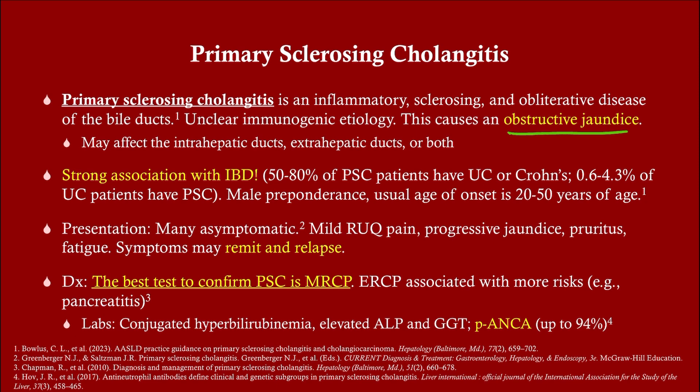With PSC, there's a big association with IBD, particularly with ulcerative colitis — 50 to 80 percent of PSC patients also have inflammatory bowel disease. However, just because somebody has IBD does not necessarily mean they're going to develop PSC; only about half to four percent of people with ulcerative colitis will develop PSC. There is a male preponderance, which is unusual for autoimmune disorders.